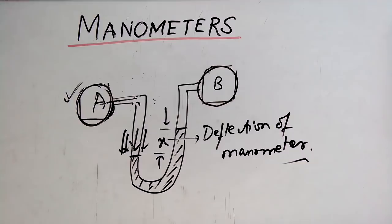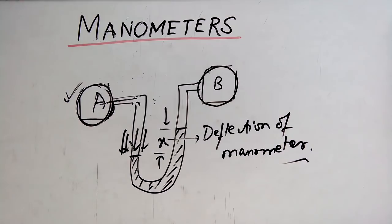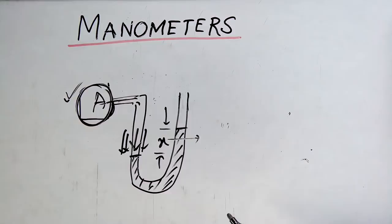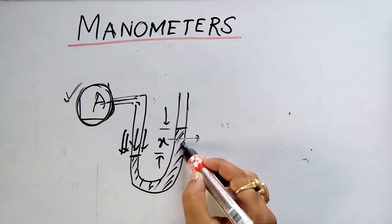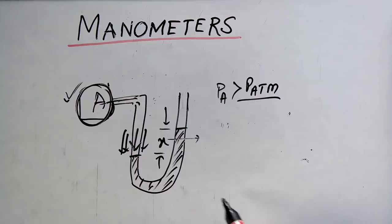Not only can you find the pressure difference between two systems or two pipes, you can also find the pressure difference between a system and the atmosphere. One end of the manometer is open to the atmosphere. By seeing the deflection of the manometric fluid, you can understand that the pressure of A is more than atmospheric pressure.